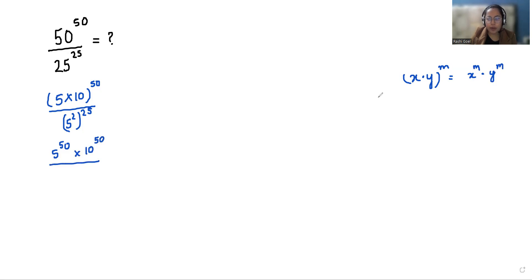And in the denominator we can use the rule x power m power n, we can write it as x power m times n. So here we can write this as 5 power 50.